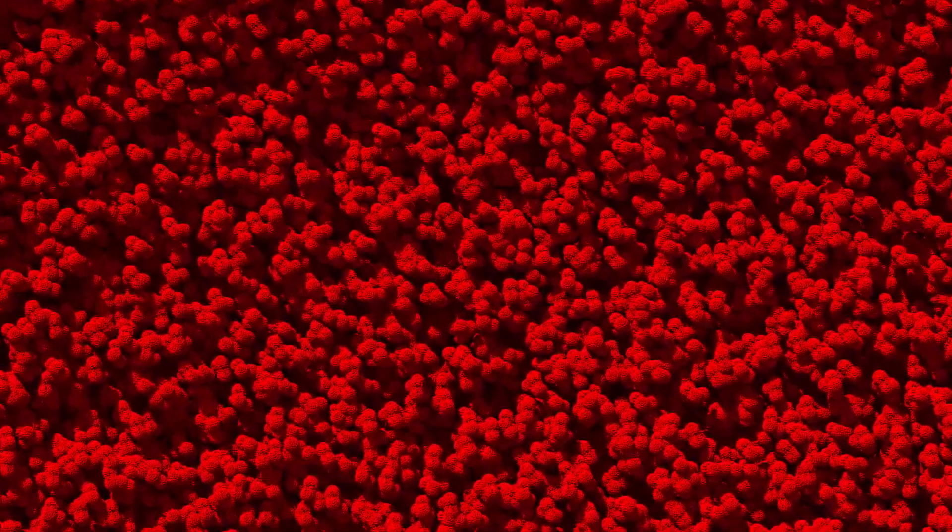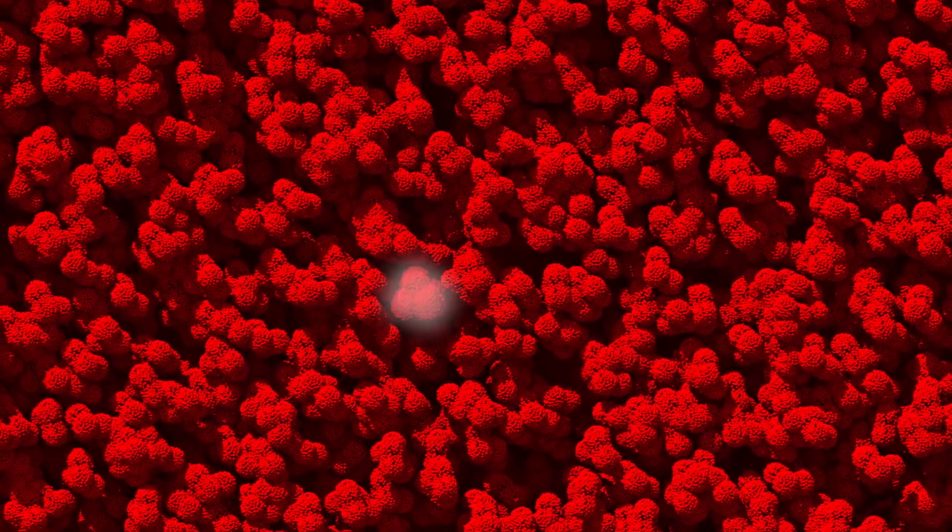Magnified 500,000 times, a red blood cell contains 280 million hemoglobin proteins, each designed to carry oxygen.